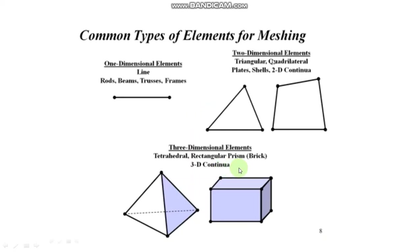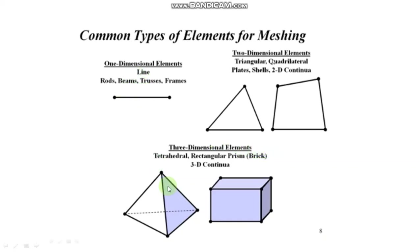The FEA solver cannot easily work with irregular shapes, but it works very well with common shapes like cubes. Meshing is the process of turning irregular shapes into more recognizable volume-like elements. Now we will see all three types of elements in detail.